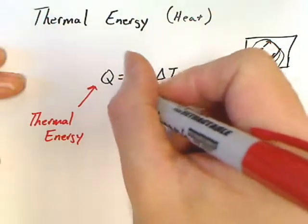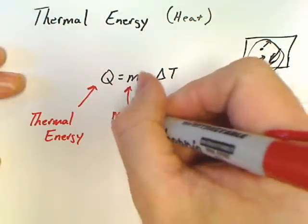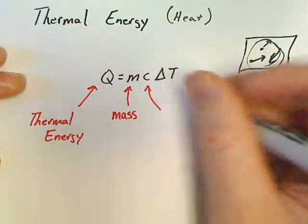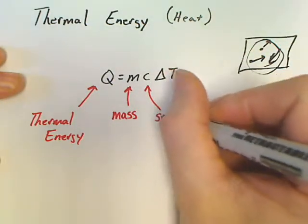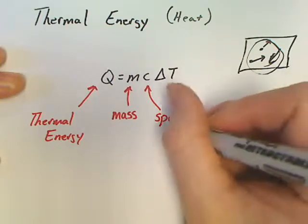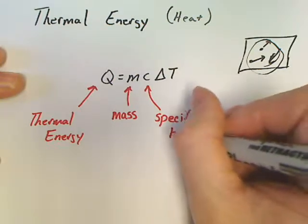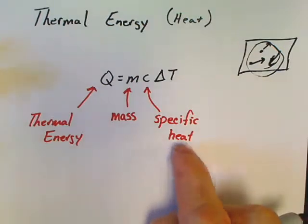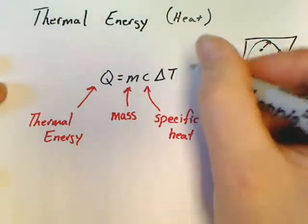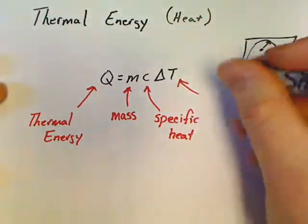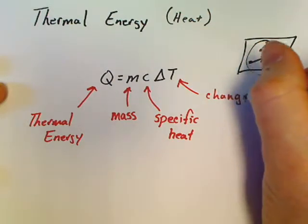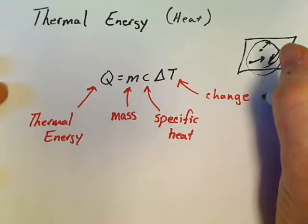M is nothing new — it's just mass. C could be something you haven't seen before: C is known as specific heat. We'll look at the definition in a second. Delta T is nothing but a change in temperature, and we'll break that down a little bit further.